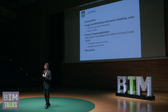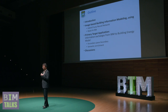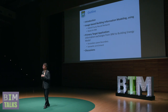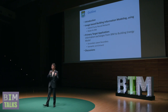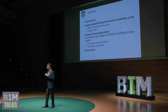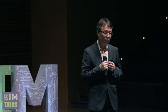There are two technologies I'm interested in. To process images, I'll discuss hybrid Neuro4G neural networks and Mask R-CNN — a convolutional neural network system — which are deep learning algorithms used for processing images. I'll also show a simple example of using as-is BIM for operations, specifically how we can exchange information from BIM to estimate energy performance of buildings, covering secondary space boundaries and semantic enrichments.